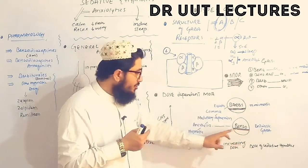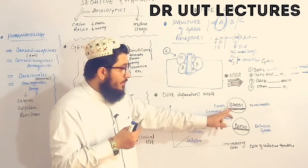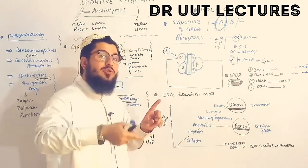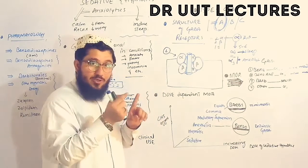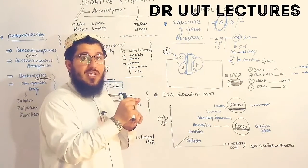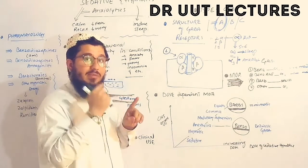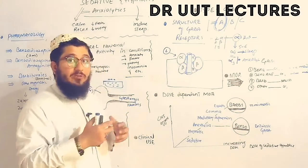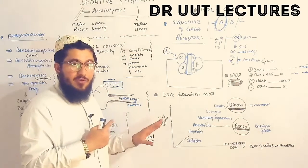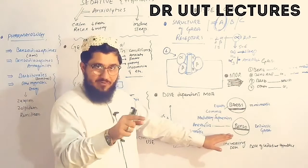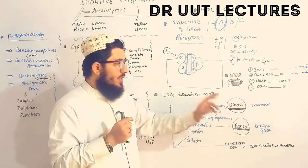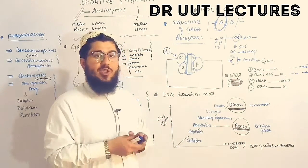Because barbiturates show GABA-mimetic activity — acting whether or not GABA is present — they produce a greater overall CNS effect compared to benzodiazepines. When barbiturates bind to the GABA receptor, they stimulate it directly and also potentiate GABA simultaneously, resulting in a steeper dose-response curve. For this reason, clinically, benzodiazepines and the newer hypnotics are preferred over barbiturates because they are safer.